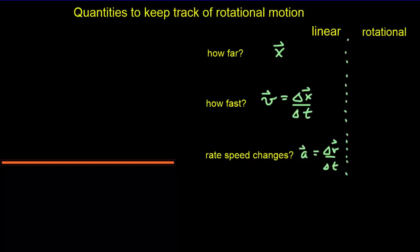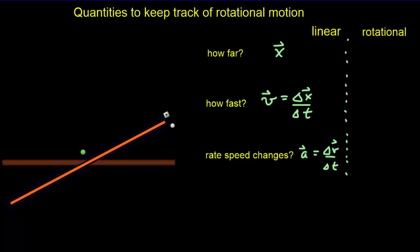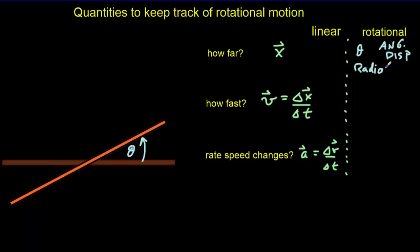Similarly, we're going to need three quantities to keep track of rotational motion. Let's suppose this rod rotates. The first thing we want to keep track of is how far it rotates. We can do that using this angle theta, which is called the angular displacement. We could use degrees to measure that angle theta, but it's more natural and easier if we use radians.